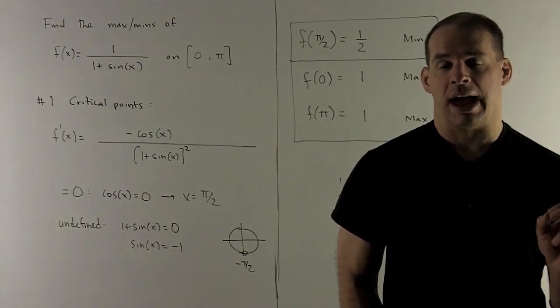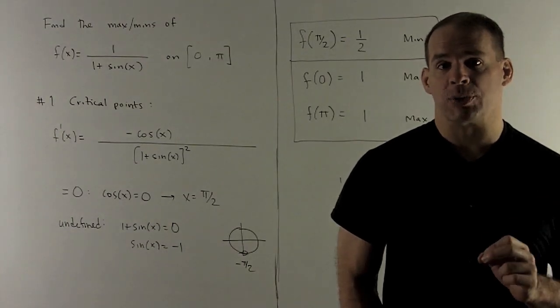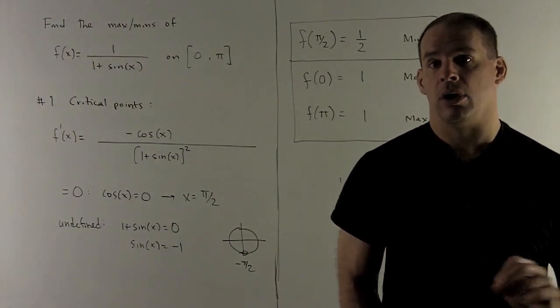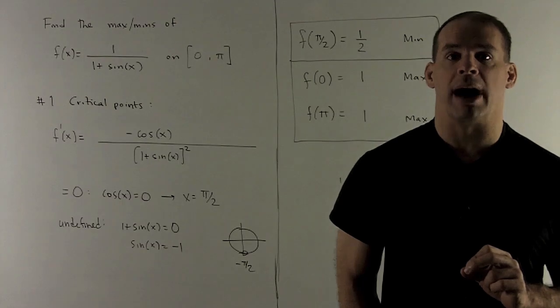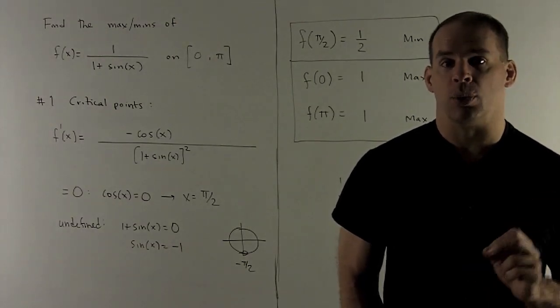So we're looking for where the line y = -1 hits the unit circle. That's going to be at -π/2 and all the add-ons by 2π. But note, that's not in our interval, so we don't need to worry about that.